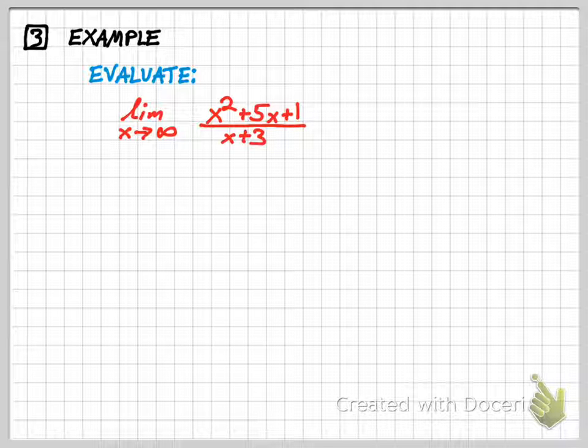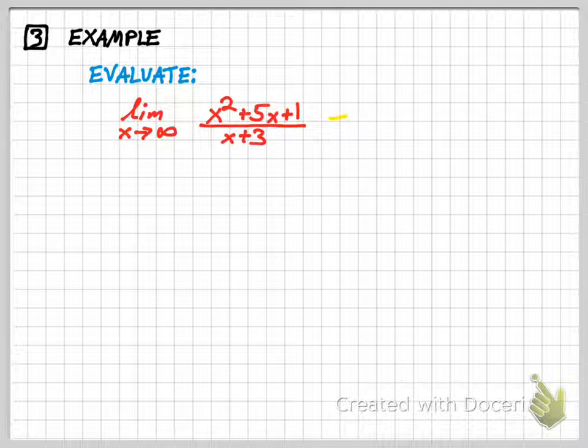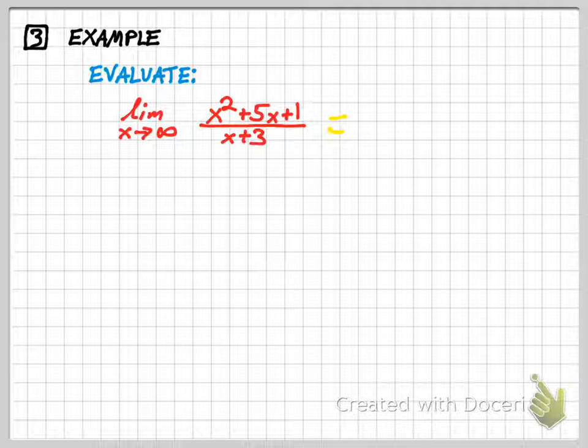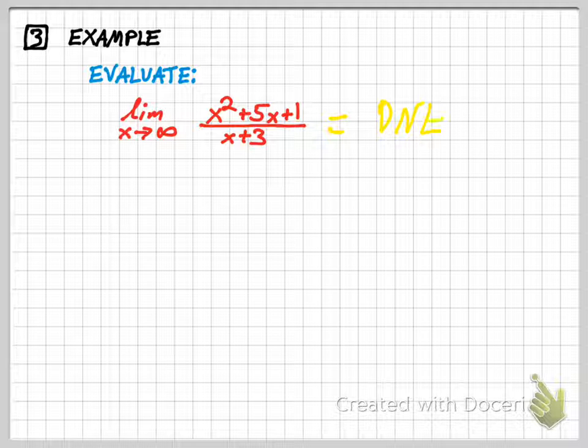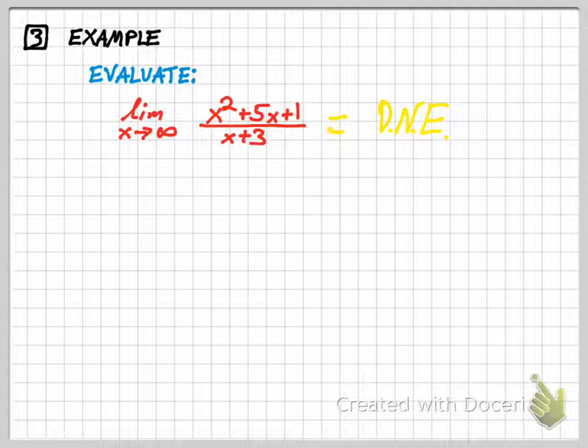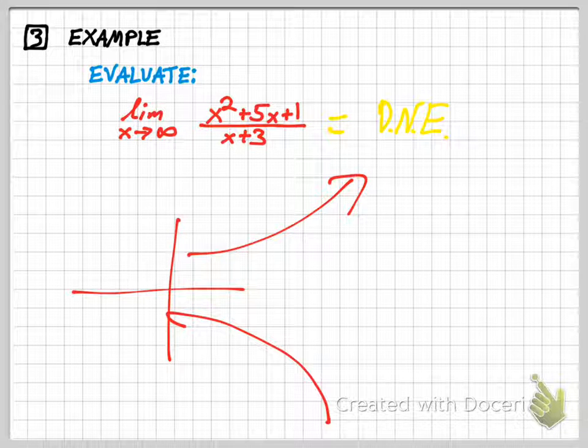And so you'd have a big number on the bottom, but you'd have a really big number on the top. And the end behavior would be infinity. So you can actually answer this with infinity, or you can just say that there is no limit. If the limit doesn't exist, it just means that the graph goes either shooting up like this or shooting down like this.